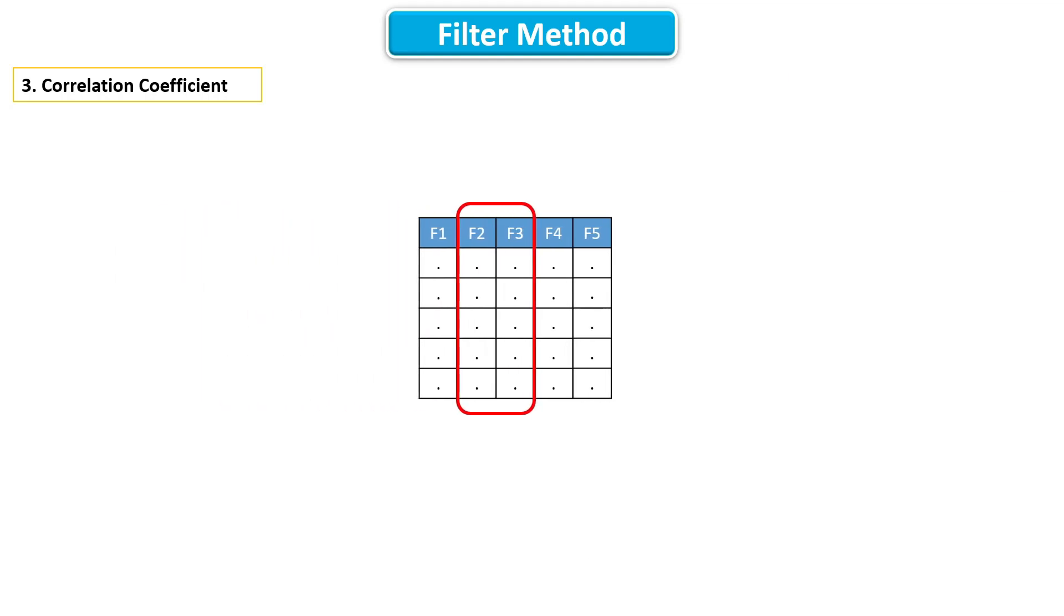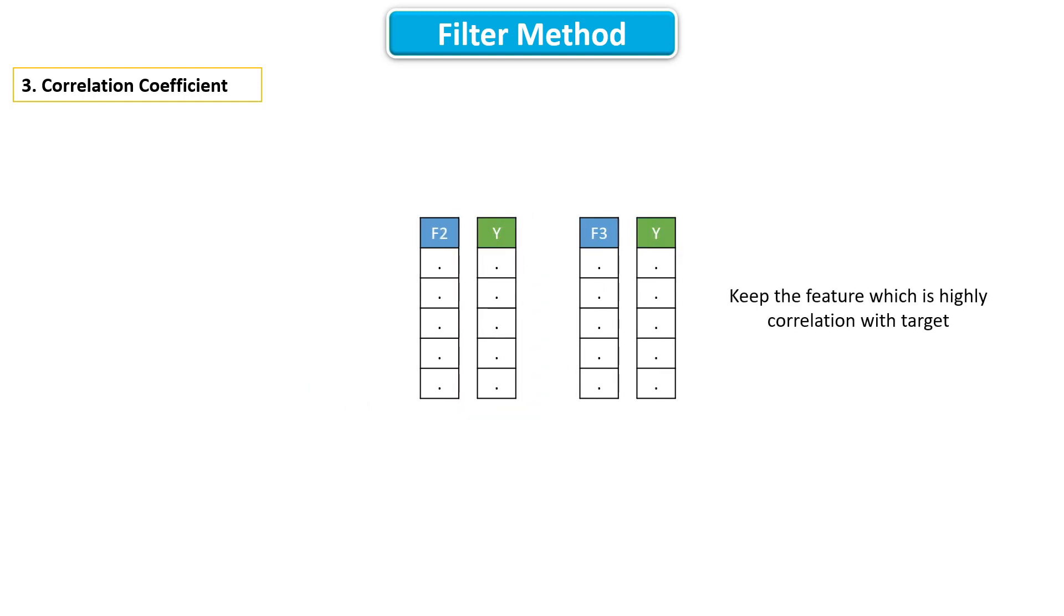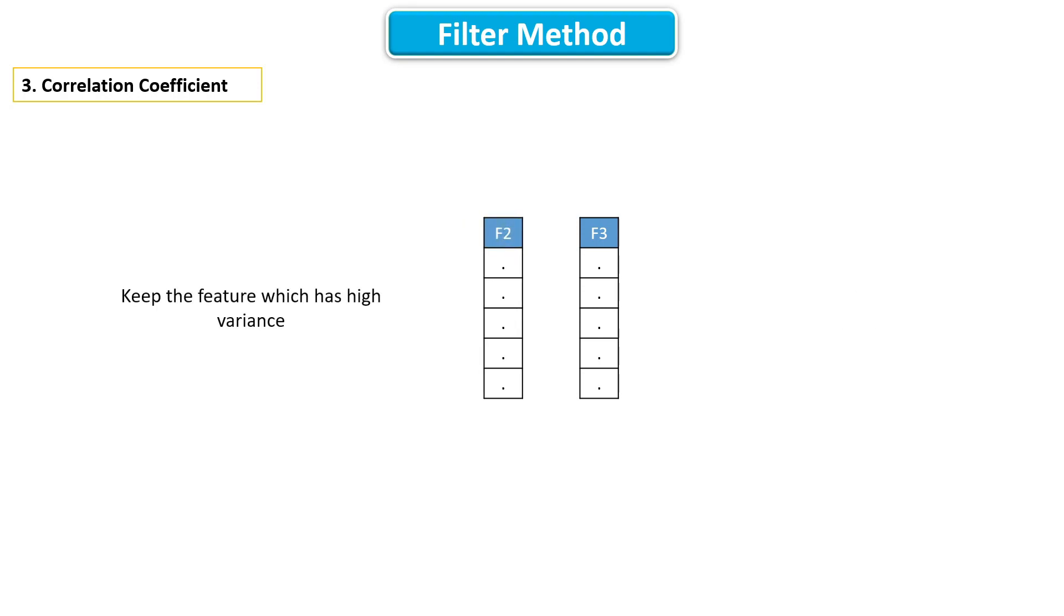But which one to drop, either F2 or F3? Well, you can keep the feature which is highly correlated with target and you can drop the another one. Or else you can find variance of both features and keep the feature which has high variance. That's it.